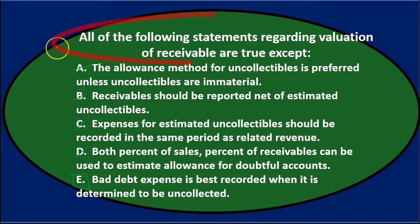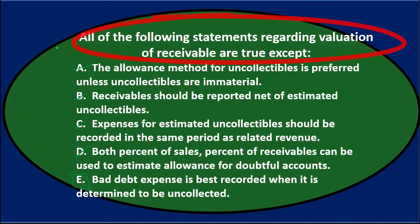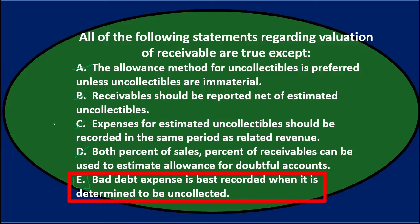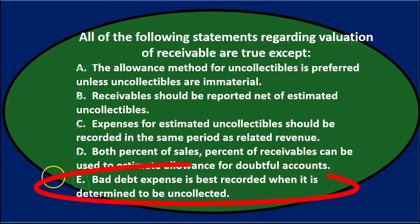One more time — all the following statements regarding valuation of receivables are true except E: bad debt expense is best recorded when it is determined to be uncollectible. So E is not true, and therefore is the correct answer.